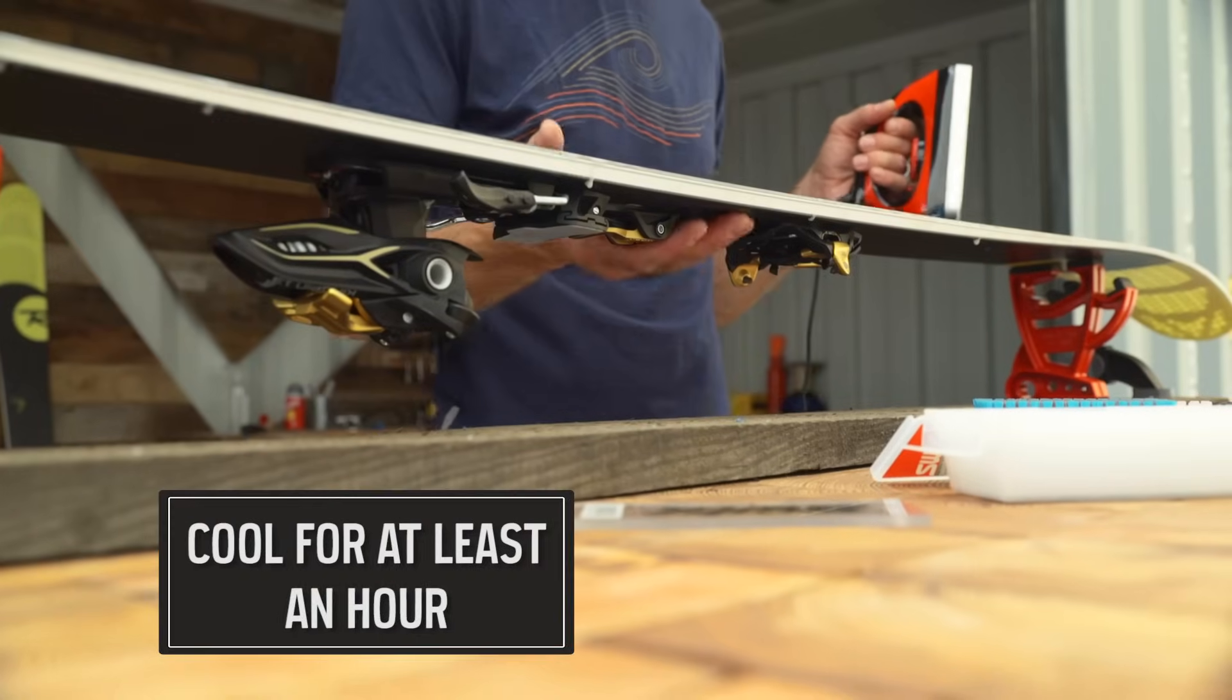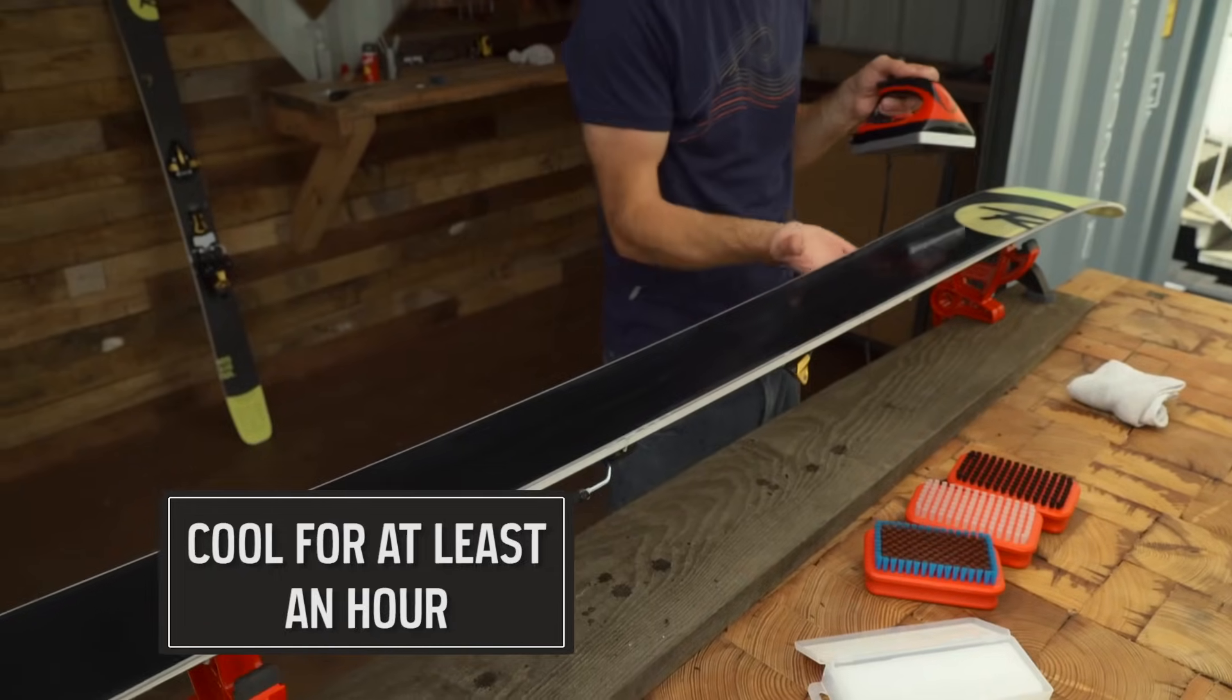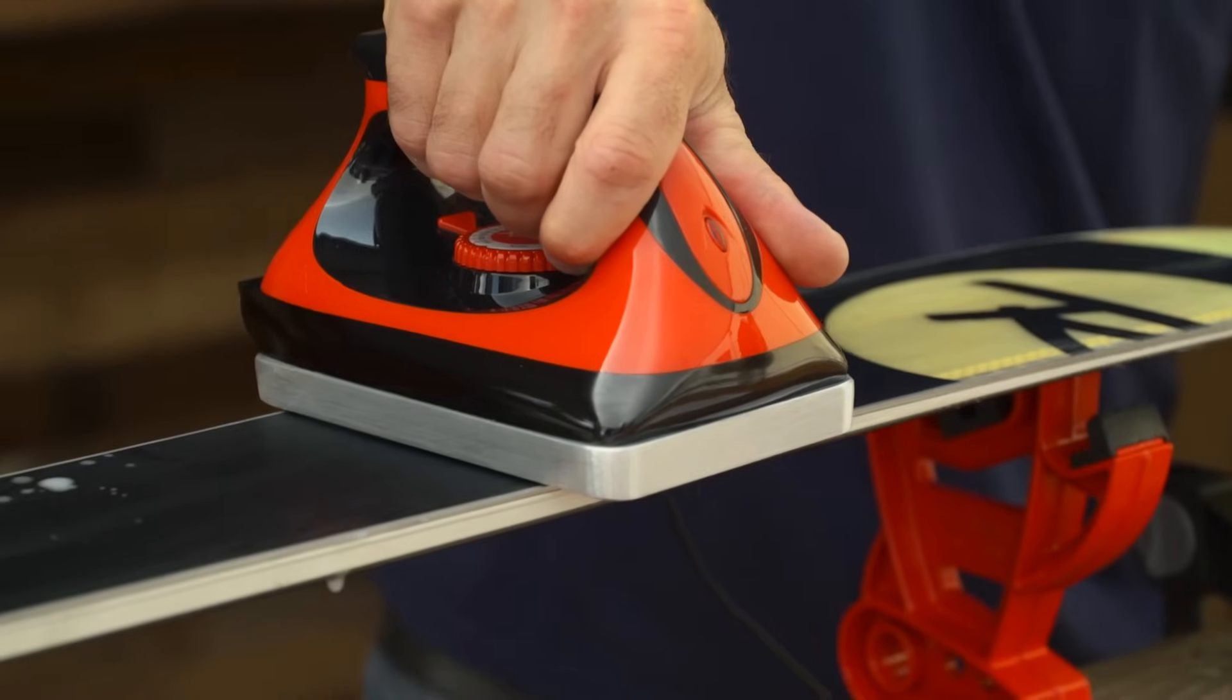After three or four passes with the iron, the ski's top sheet should feel warm. Let the whole ski cool completely back to room temperature. This is a great time to wax the other ski.